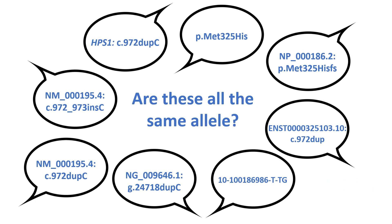There are many different ways to describe the same genomic variant. We can describe the cDNA change, the protein change, its genomic coordinates, or we can talk about it using more than one transcript. All of these different ways are used all the time in the literature, on laboratory reports, and publicly available resources. When we use all these different vocabularies so frequently, how can one keep up?